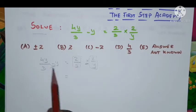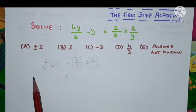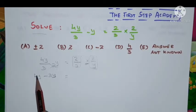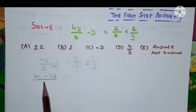We'll do the cross multiplication. Here, 1 is there. So, 1 into 4y is 4y minus 3 into y is 3y divided by 3 into 1 is 3.